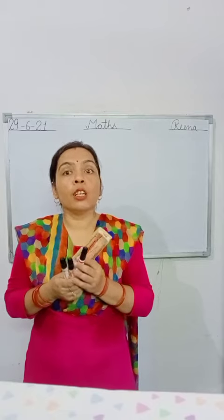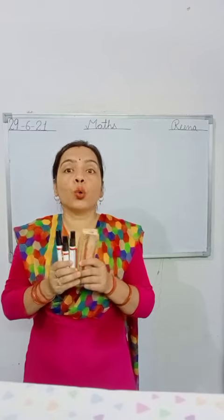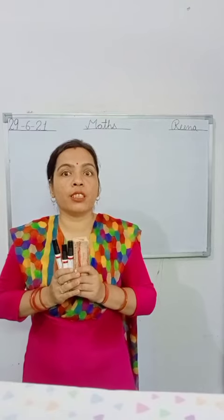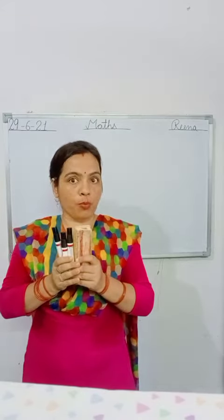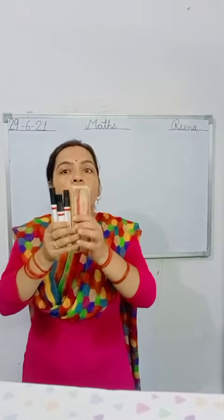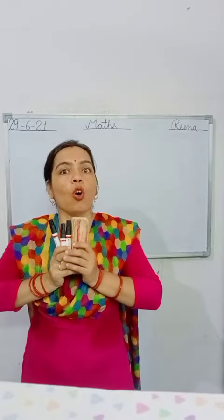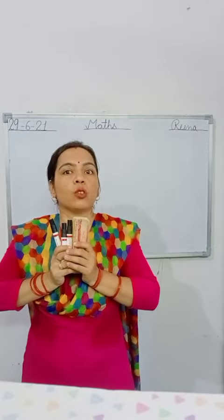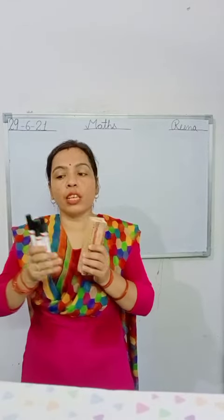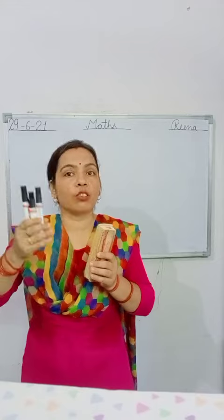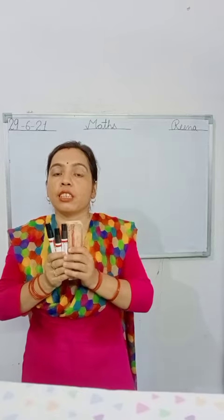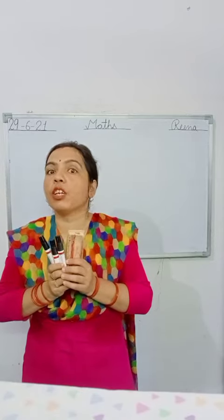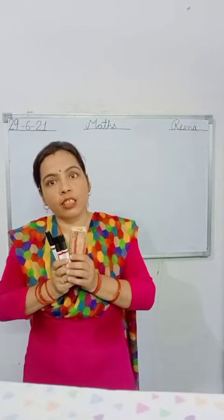Is it clear? Now for the total number of objects, we add our objects. That means we add our three markers and one duster, then we get our answer.